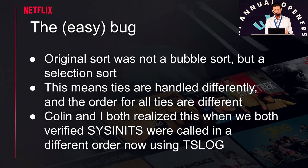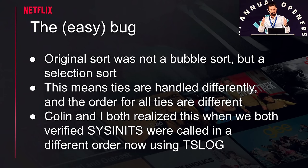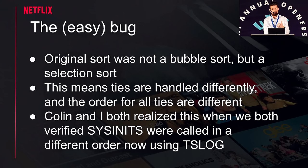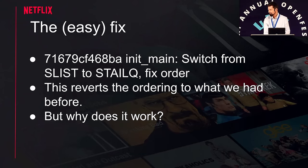It turned out the original sort wasn't a bubble sort — it was a selection sort. That meant ties were handled differently. We went from having all ties kept in alphabetical order to having all ties in reverse alphabetical order. Colin and I both independently verified this using something he made called TS log, which logs what's running at boot and how long it takes. The easy fix was to reverse the order his new sort was using, and once we did that everything worked — but still made no sense. Why did that order matter?